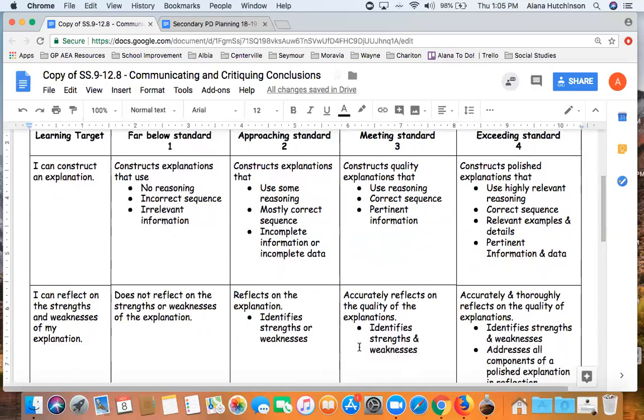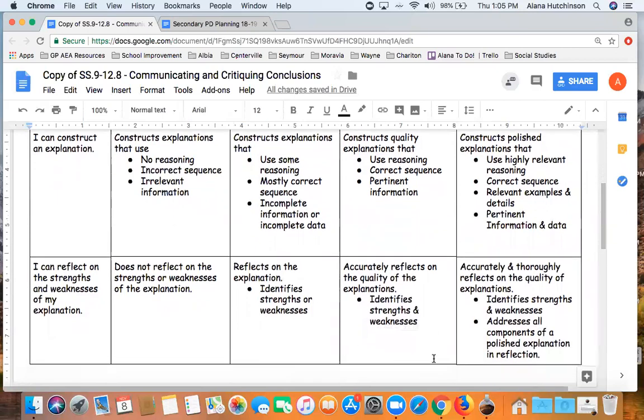So here, again, I started with a three that they can accurately reflect on the quality of the explanation. I want them to be able to identify strengths and weaknesses to be proficient. For a two, I made it or, so maybe they can identify strengths but not weaknesses. And again, a one, I just don't have enough evidence.